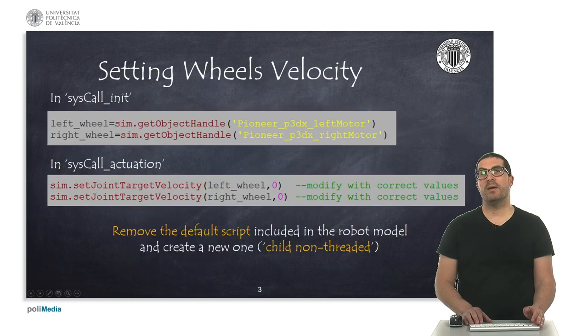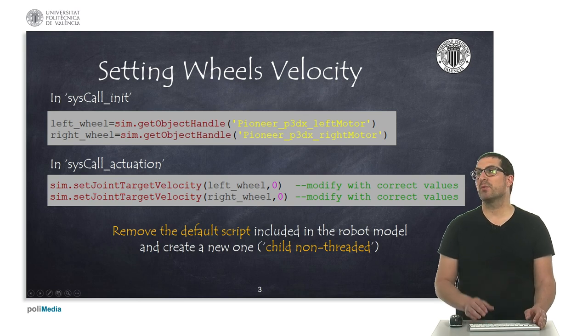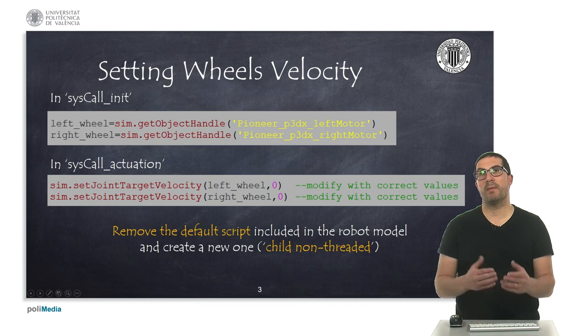Before you start programming, the robot comes, or the model of the robot comes with a default script. So, we don't want to use that script, so you need to delete it. And then we have to create our own child non-threaded script to implement your own code.